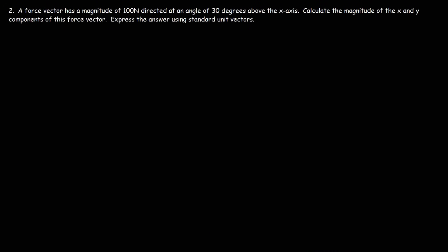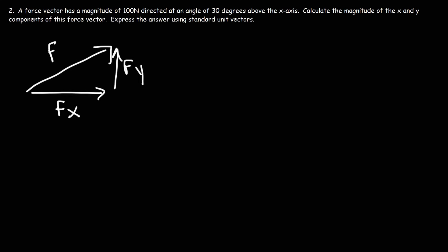Now consider this problem: a force vector has a magnitude of 100 newtons directed at an angle of 30 degrees above the x-axis. Calculate the magnitude of the x and y components of this force vector. Let's write some equations. We have the force vector F, which we can break up into its x-component and its y-component. Let's call this angle theta. Now let's review some things from trigonometry.